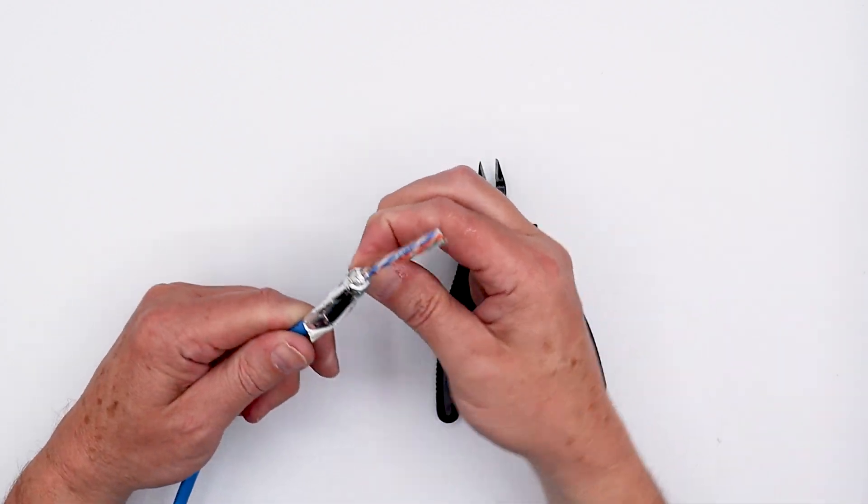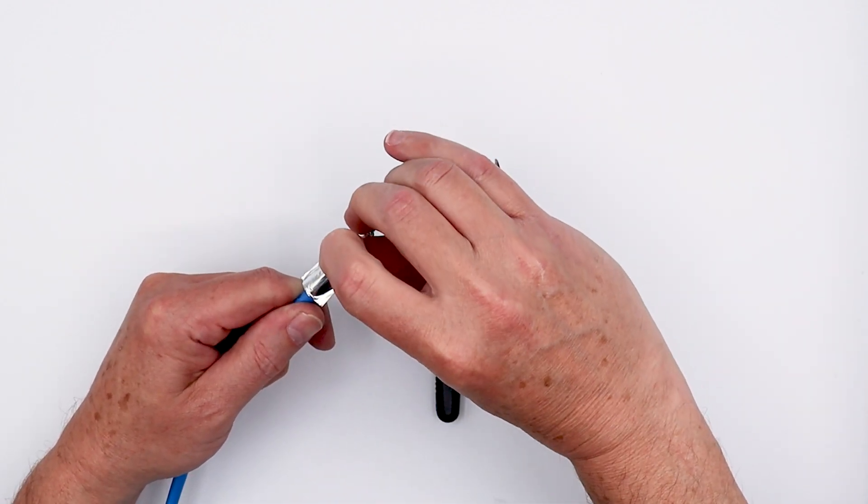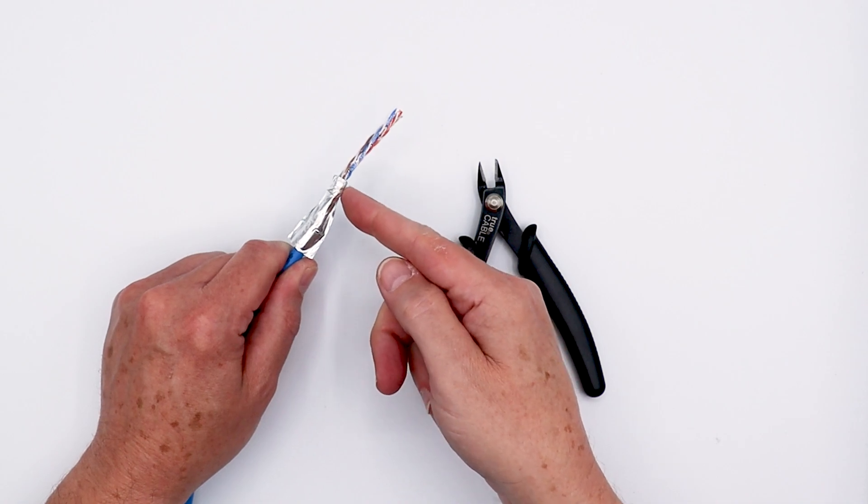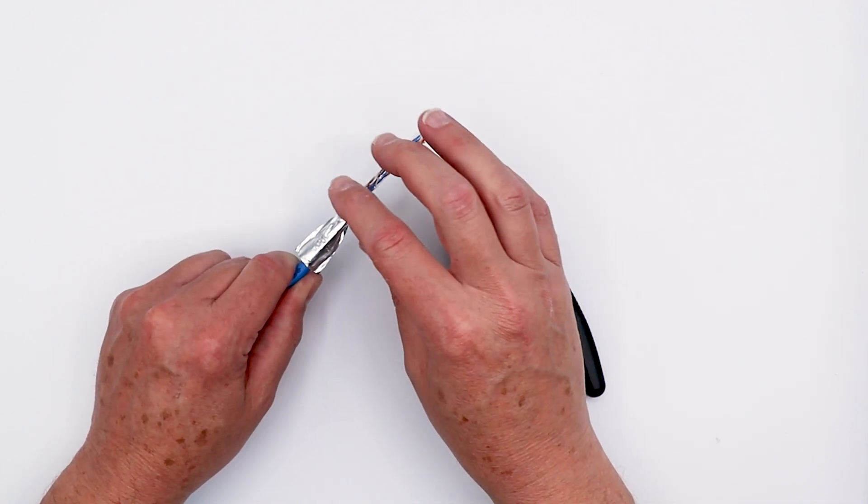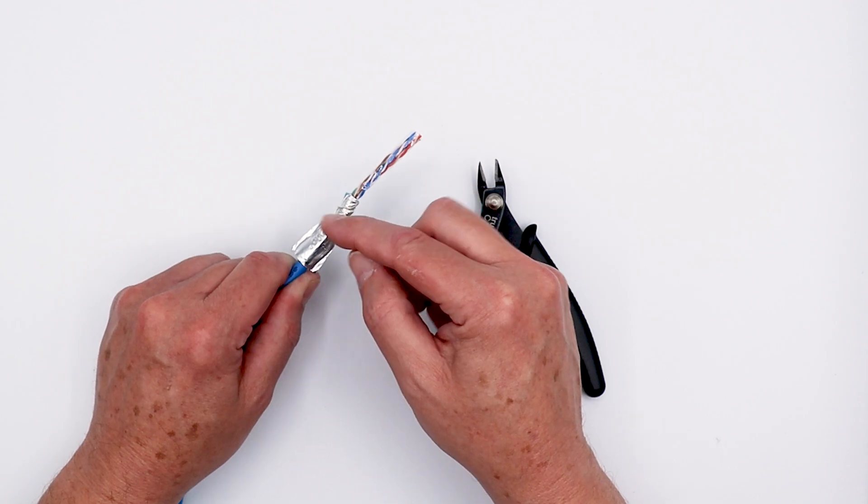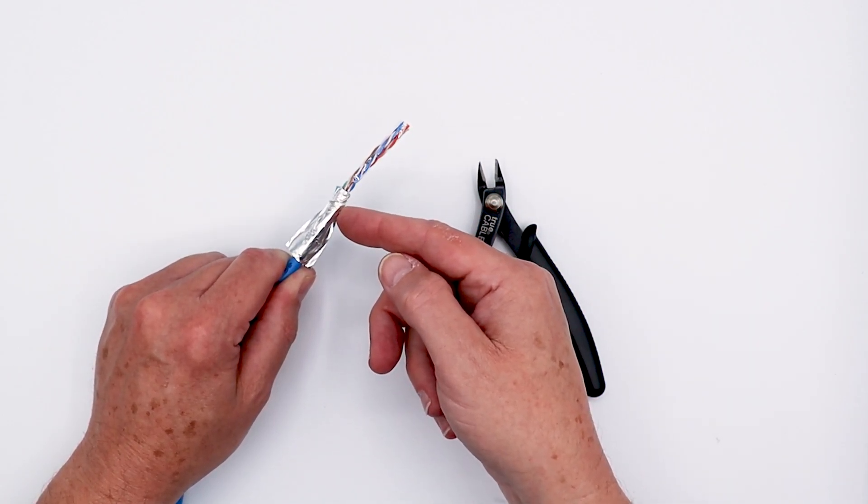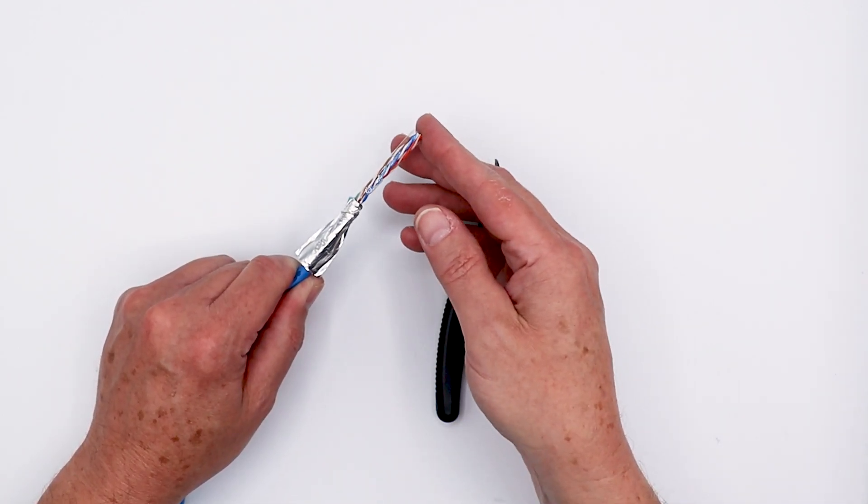Typically you'll use the drain wire and shield in combination when bonding termination hardware, although you can also remove the cable shield and then just simply use the drain wire with some copper tape, copper fabric tape, stuff like that.